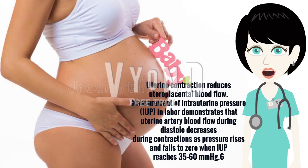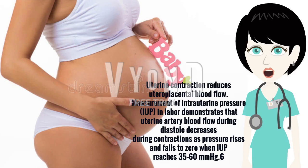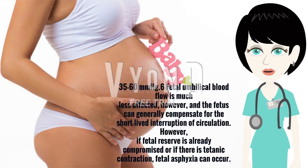Uterine contraction reduces uteroplacental blood flow. Measurement of intrauterine pressure, EAP, in labor demonstrates that uterine artery blood flow during diastole decreases during contractions as pressure rises, and falls to zero when EAP reaches 35–60 mmHg.